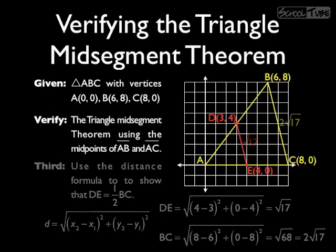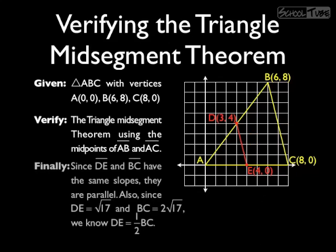So finally, we realize that they both have a slope of -4. Same slopes means they're parallel. And since DE is the square root of 17 and BC is 2 times the square root of 17, then DE is half of BC. Thus, we have verified the triangle midsegment theorem for this triangle ABC.